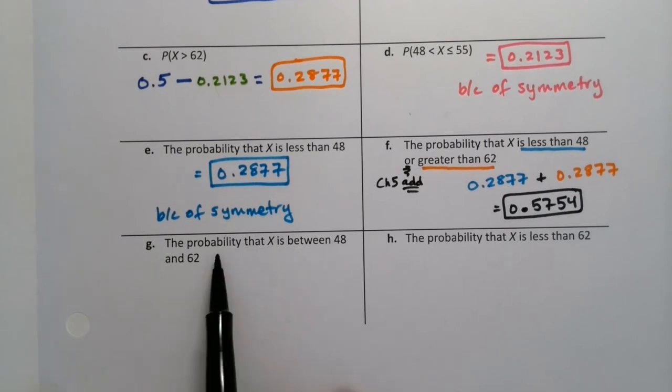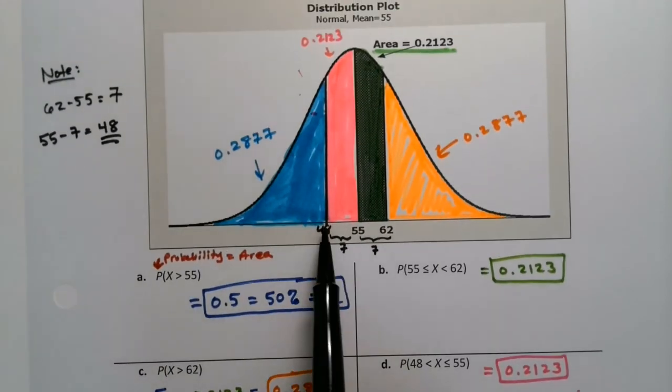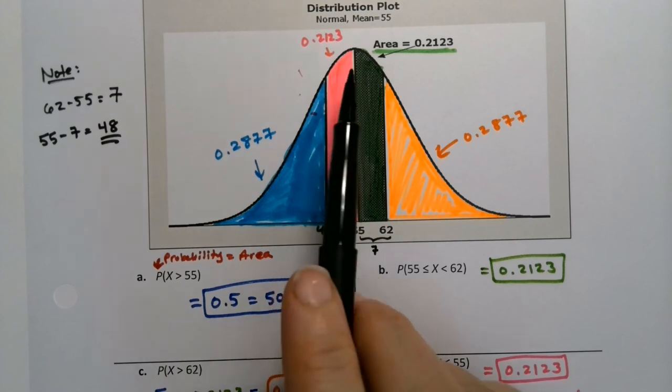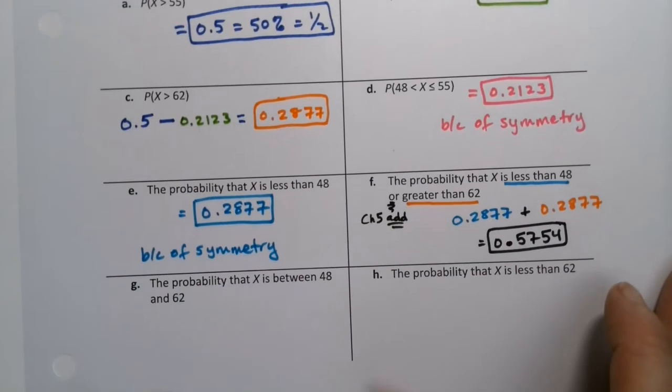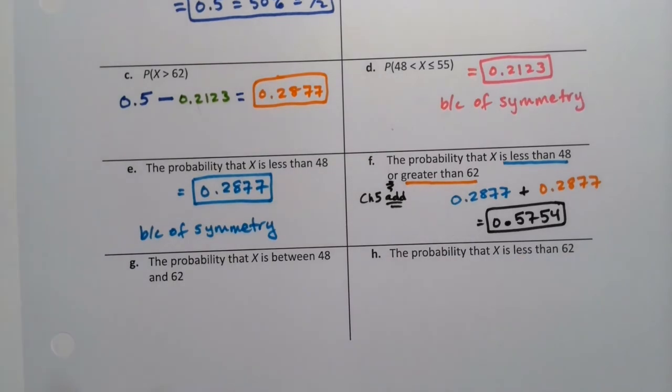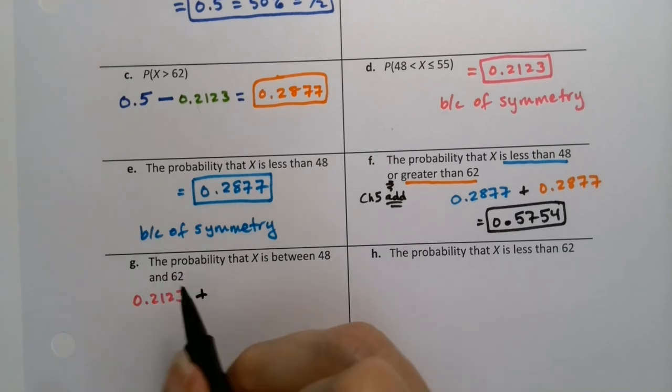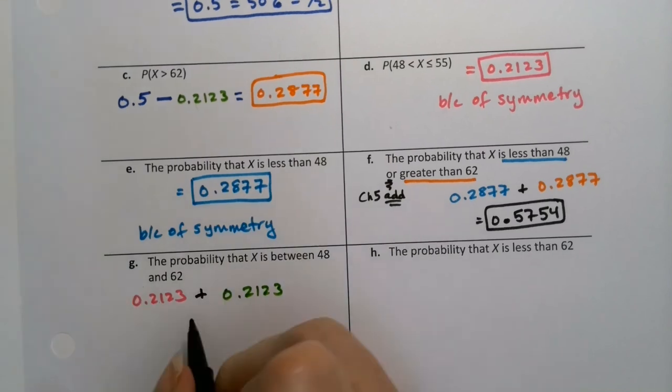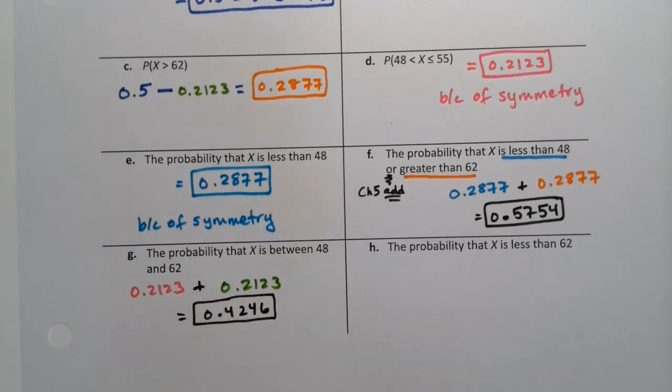Now what about the probability that X is between 48 and 62? Between 48 and 62. Here's 48. Here's 62. Being between those two is these two zones, 0.2123 and 0.2123. So you just add them up, right? Because either you're in the pink zone, which is 0.2123, or you're in the green zone, which is another 0.2123. And together, those would make 0.4246.